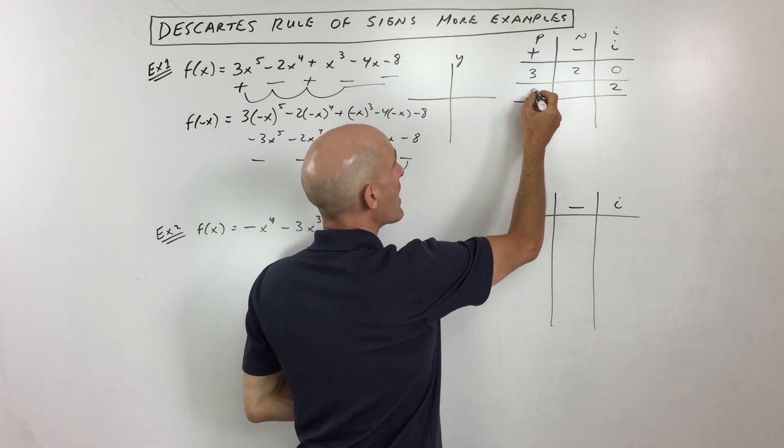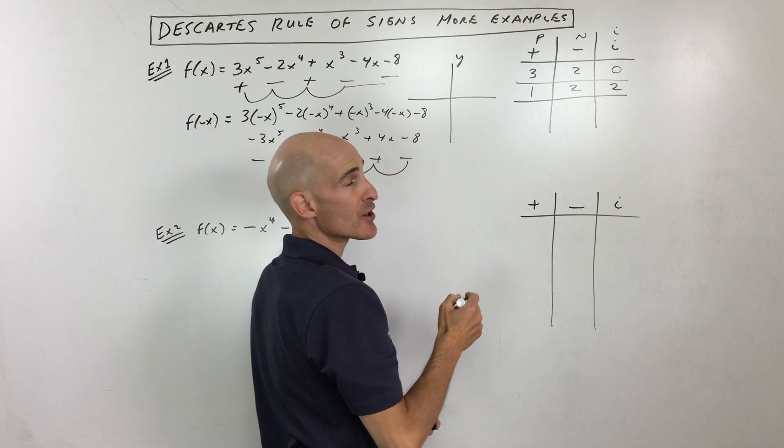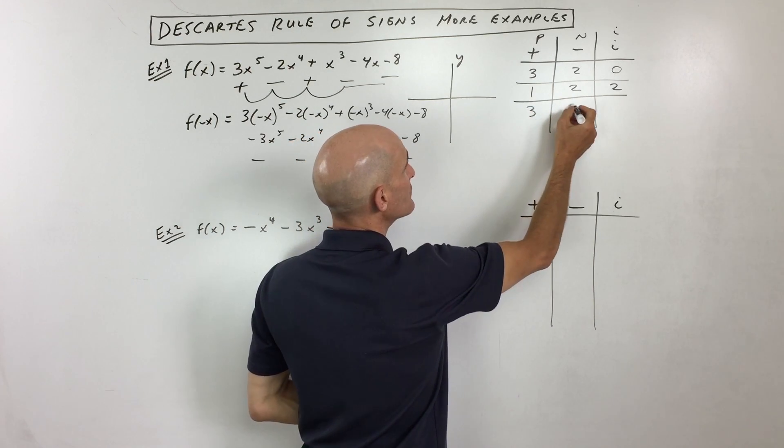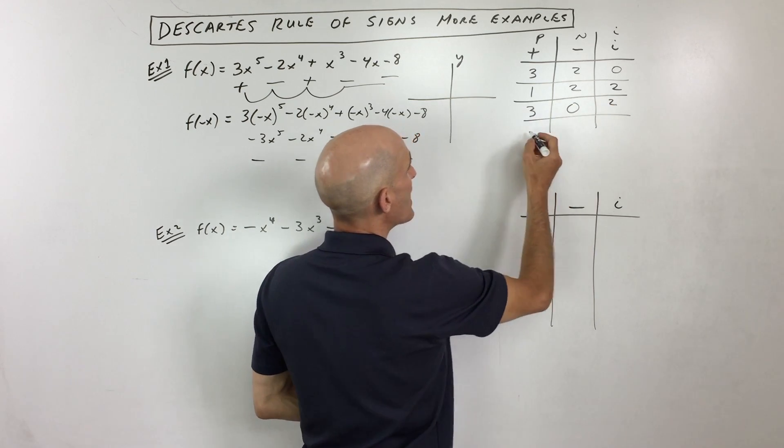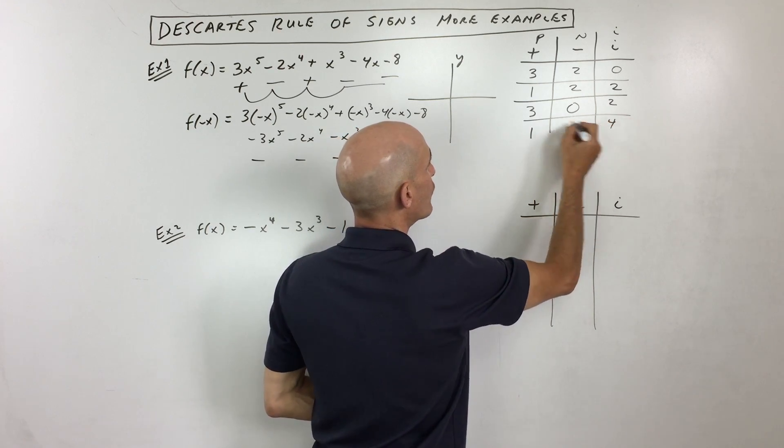So in this case, another possibility is we could have 1 positive, 2 negative, and 2 imaginary. Another possibility would we could have 3 positive, 0 negative, and 2 imaginary. Another possibility we could have 1 positive, 0 negative, and 4 imaginary.